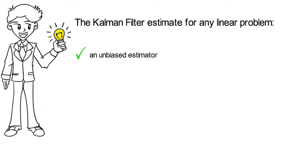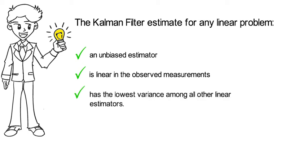First, it's an unbiased estimator. Second, the Kalman filter estimate will be linear in the observed measurements. And third, the Kalman filter estimate will have the lowest variance among all other linear estimators, meaning it will be the most efficient estimator.